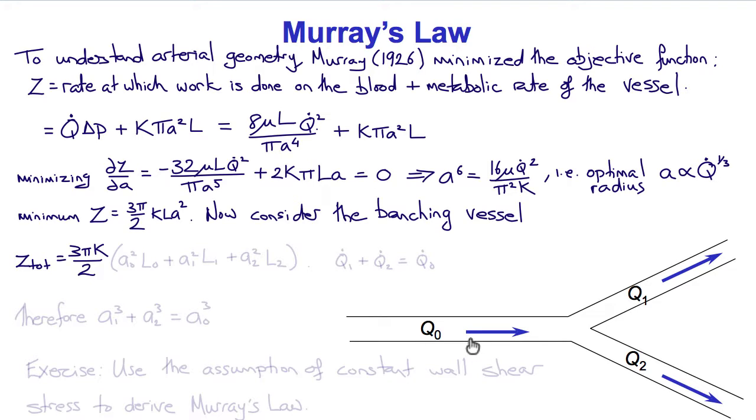So if we consider this network here, then the total Z would be 3 pi K over 2 times A naught squared L plus A1 squared L1 plus A2 squared L2. And by the continuity equation Q1 plus Q2 will equal Q naught because the total flow is constant. And that would therefore lead us to conclude that A1 cubed plus A2 cubed is equal to A naught cubed from this result here. And in fact, this is what experimental observations have seen, that the ratio of the diameters follows this relationship.